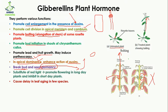Gibberellin acts as a substitute for red light and promotes flowering in long-day plants, while inhibiting it in short-day plants. Long-day plants are those that grow in summer when the day length is very long. Gibberellin inhibits flowering in short-day plants, which are plants that grow during winter when the day is short.